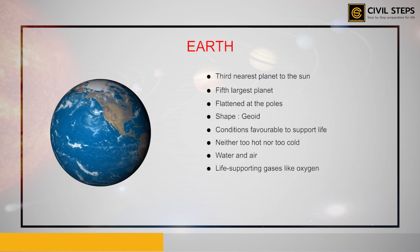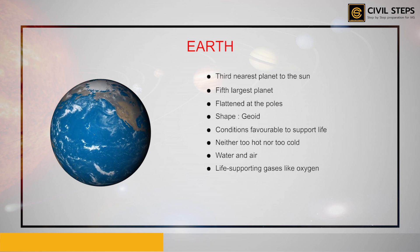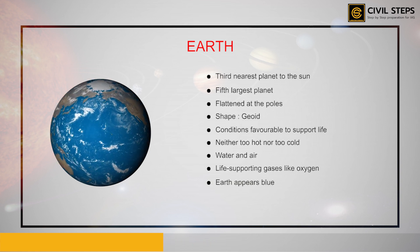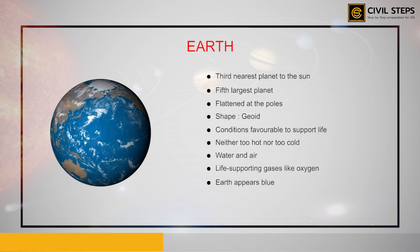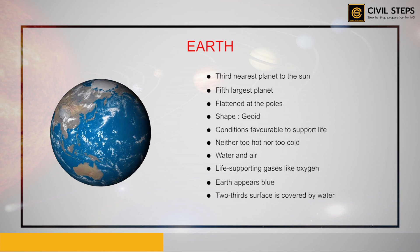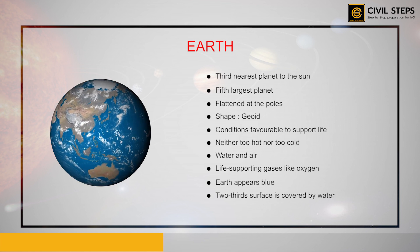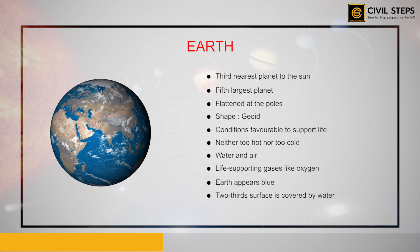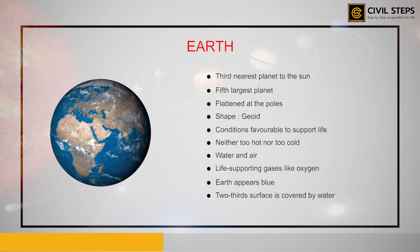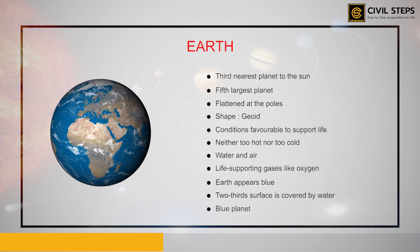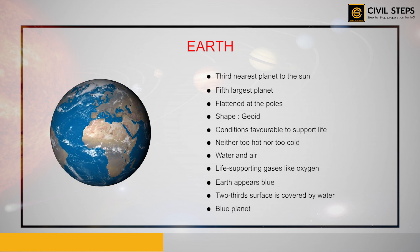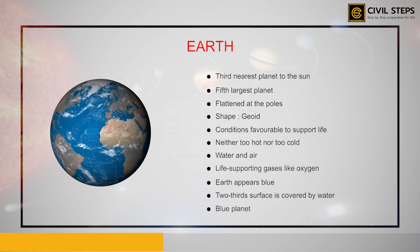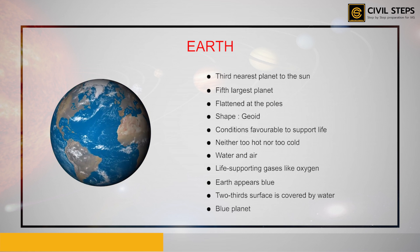From outer space, the Earth appears blue because its two-thirds surface is covered by water. Therefore, it is even called the blue planet. After discussing about the Earth, we will now talk about the Moon.